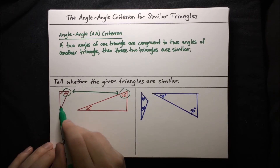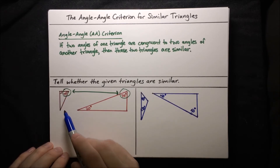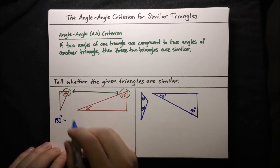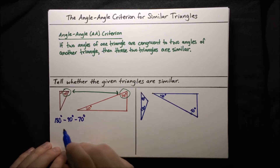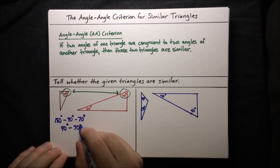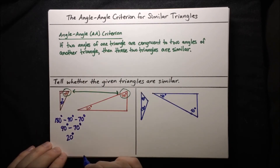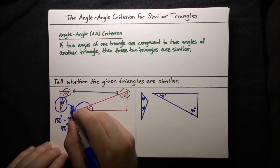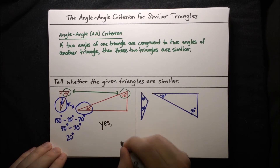Let's find the missing angle in the right triangle. We know there are 180 degrees in a triangle, and we have the other two angles: 70 degrees and the right angle, which is 90 degrees. So we compute 180 minus 90 minus 70, which gives us 20 degrees. So this third angle is 20 degrees. And there we go — we have another pair of congruent angles: this 20-degree angle and that 20-degree angle. Since we have two pairs of congruent angles, we can conclude by the angle-angle criterion that yes, the triangles are similar.